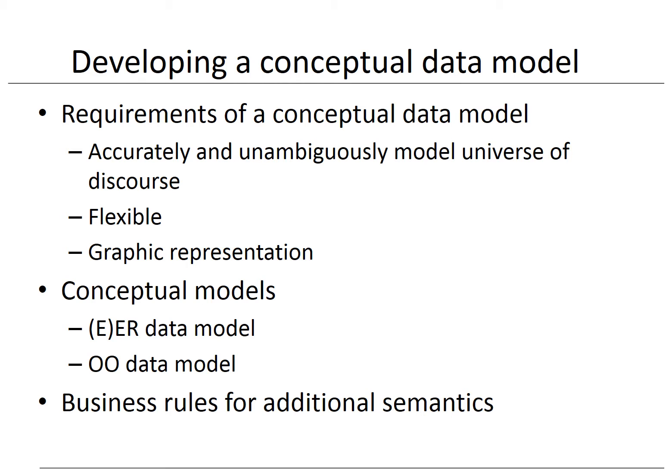When considering all these requirements and the data models discussed in the previous chapter, it becomes obvious that only two models are eligible for conceptual data modeling: the ER model and the OO model. Since both of these models also have their shortcomings, it is of key importance to extensively document and list any semantics that cannot be successfully modeled.